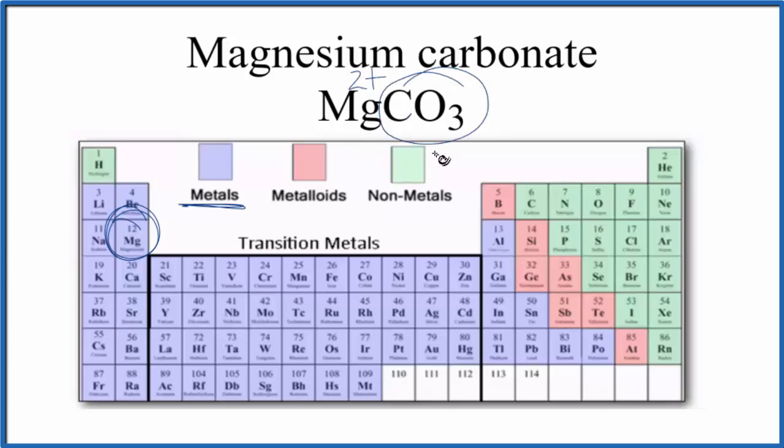And then this whole carbonate ion, CO3, this is a polyatomic ion, and the carbon is bound pretty tightly to these three oxygens, and this stays together. This whole ion has a 2 minus ionic charge. This is a good one to memorize.